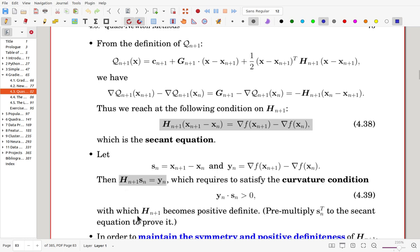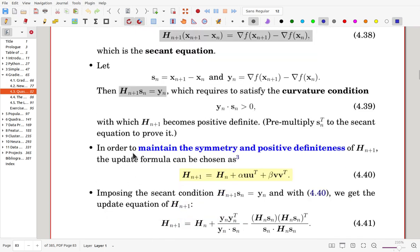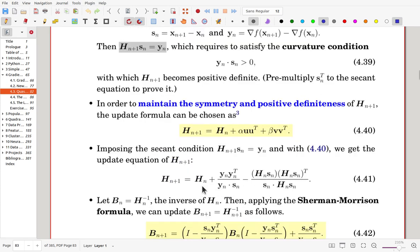Now, furthermore, in order to maintain the symmetry and positive definiteness of the Hessian, the approximation of a Hessian matrix Hn+1, we update Hn+1 using this formula. And these two are rank one matrices. Now, using earlier conditions and this equation, one solution for that equation can be organized in this form. The solution satisfies earlier conditions.